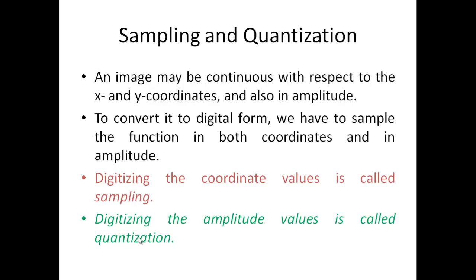To understand sampling and quantization: an image is continuous with respect to x and y coordinates and also in amplitude. To convert it to digital form, we sample the function in both coordinates and in amplitude. Digitizing the coordinate values is called sampling, whereas digitizing the amplitude values is called quantization.